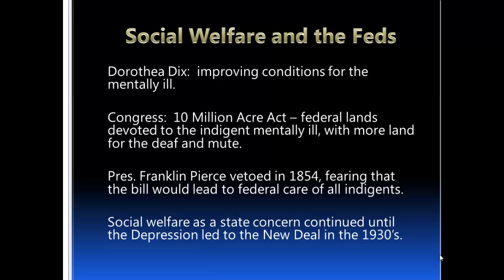One person you may remember from your American history lessons is Dorothea Dix, who campaigned and agitated for the provision of better conditions for the mentally ill in America. Largely because of her campaigning, Congress came to pass the Ten Million Acre Act in the early 1800s, which set up federal lands devoted to the indigent mentally ill — those who had no means to take care of themselves or seek treatment. Another two and a half million acres were set aside for the deaf and the mute.